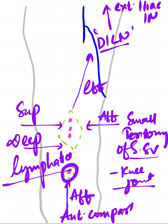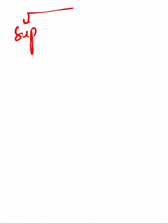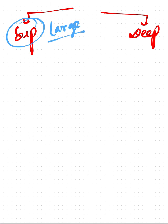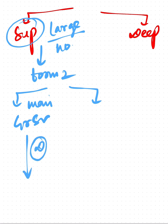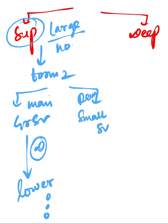This is all about the deep lymph nodes. Now coming to the lymphatics — they are grouped similarly into superficial lymphatics and deep lymphatics. The superficial lymphatics are large in size as well as number, and as the name suggests they run in the superficial fascia. They form two streams: the main stream follows the great saphenous vein and drains into the lower vertical group of the superficial inguinal lymph nodes.